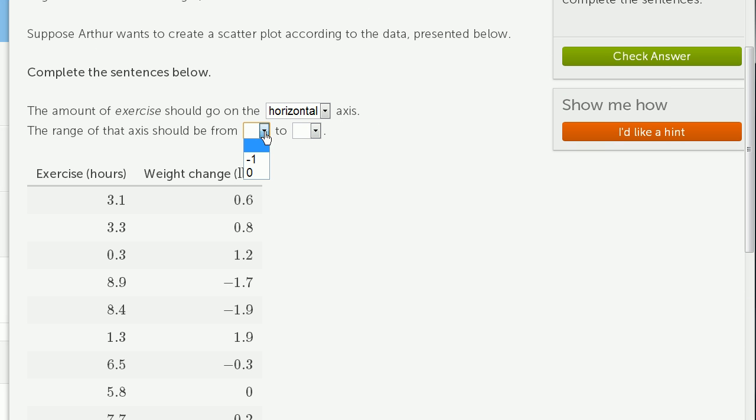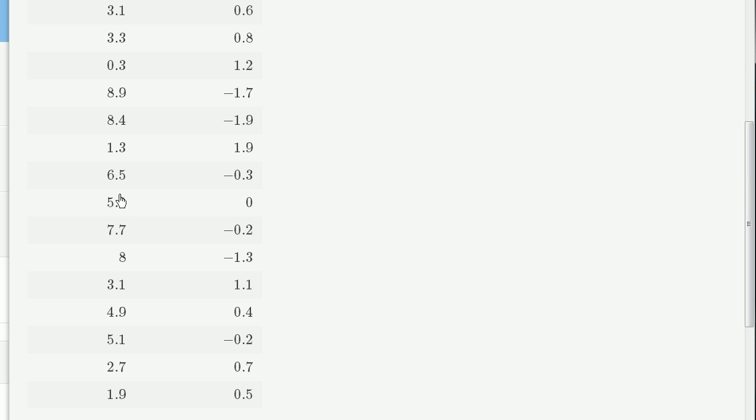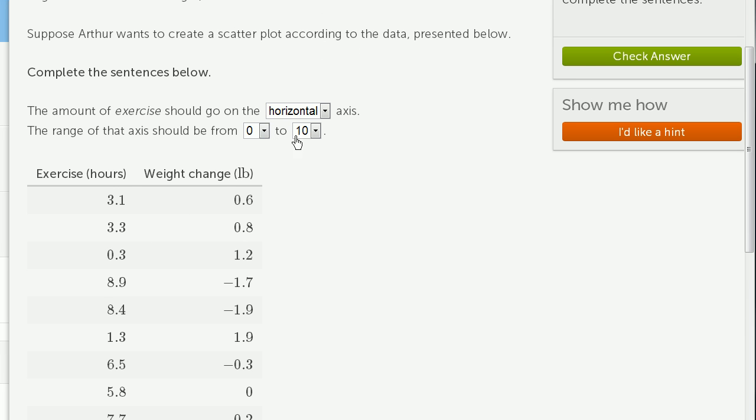So we would want it to be from 0.3, or I guess we could go from 0 all the way to... well, 8 won't be good enough because we have a couple of data points at 8, 8.4, 8.9. We need to go all the way to 10. We definitely don't have to go negative because there's no negative amount of exercise here. So 0 to 10 should be sufficient.